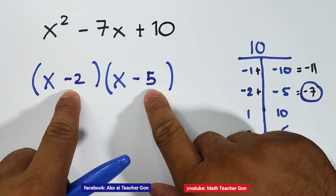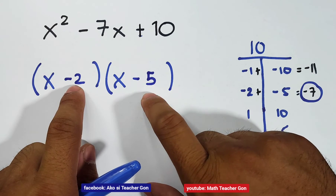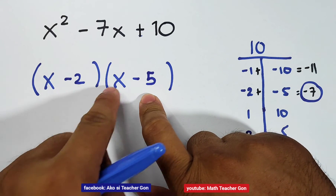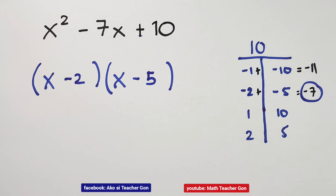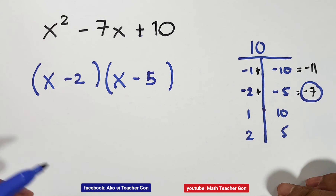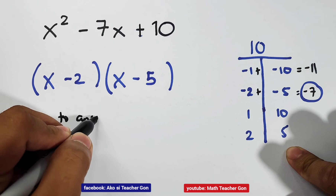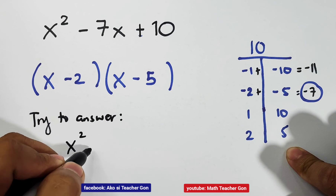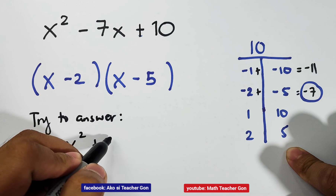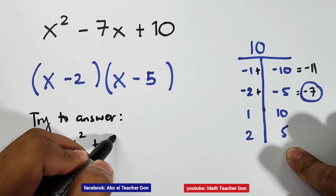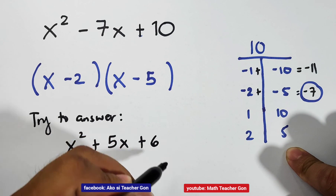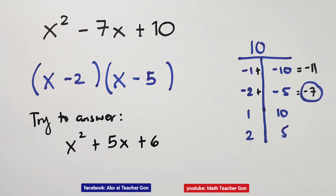Another question: can we interchange the position of negative 2 and negative 5? Yes, since the coefficient of this variable x is equal to 1. So that's it guys, I hope you learned something from this video. If you're new to my channel, don't forget to like and subscribe and hit the bell button to be updated on our latest uploads. I will give you an assignment: try to factor out x squared plus 5x plus 6. Bye-bye!